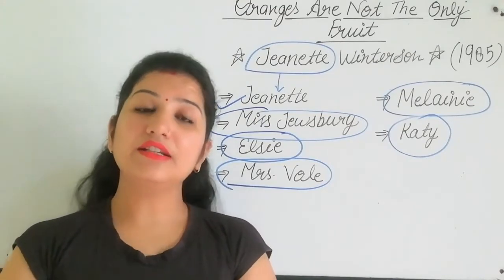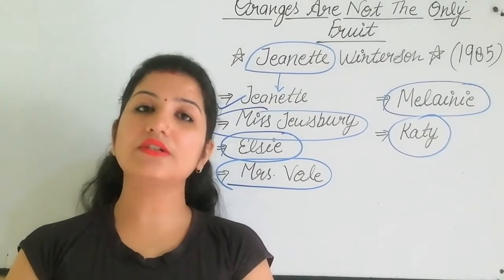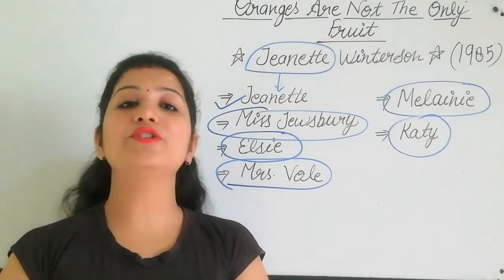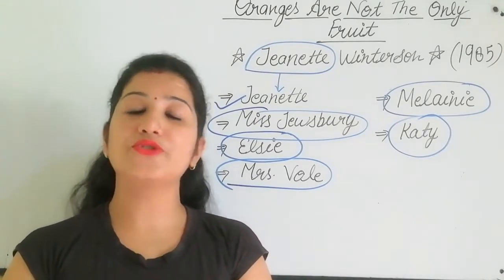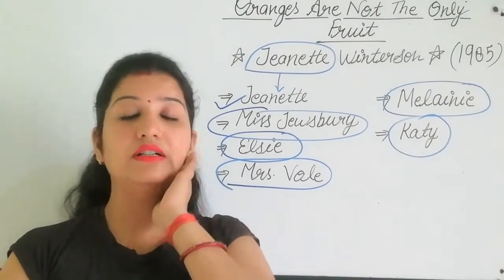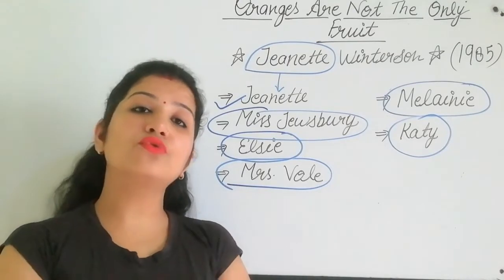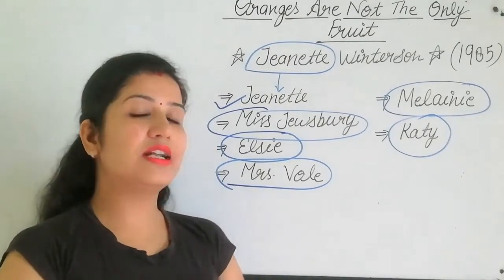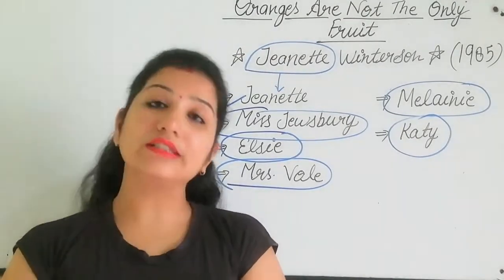Janet tells her mother about which church is corrupt. Janet's mother always talks about problems, but Janet's perspective has shifted. This novel is ultimately a novel of progress and growth.